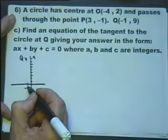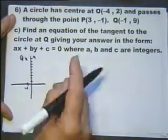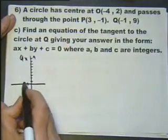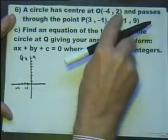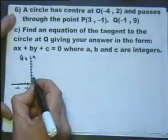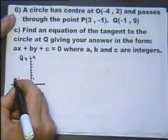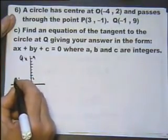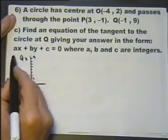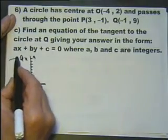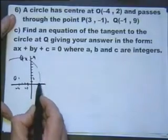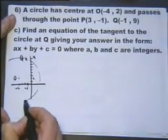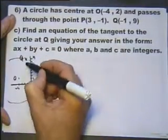We'll include the centre of the circle and the centre of the circle is at O at minus 4, 2. So that's the centre of the circle at O. So the circle passes through Q and it also passes through P, which was at 3, minus 1, which is over there somewhere. And there's our circle. And we've got to find the equation of this tangent to the circle.